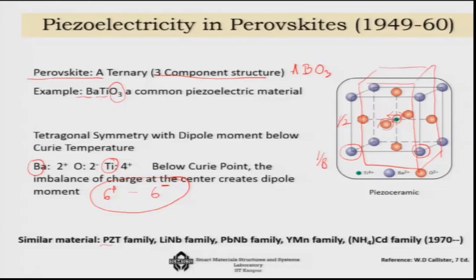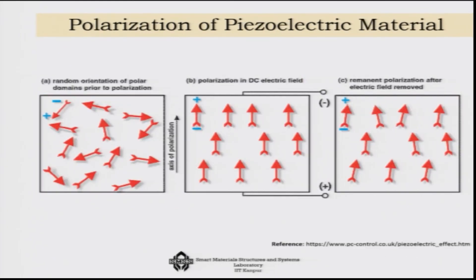This effect occurs not only in barium titanate ABO3 systems but also in other materials like lead zirconate titanate, lithium niobate, lead niobate, yttrium and manganese based systems, and NH4 cadmium based systems — all found later. Most of the development happened towards the end of the last century, giving us materials where this effect is more and more pronounced, so it can be used for real engineering applications.